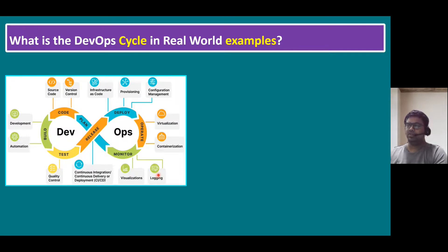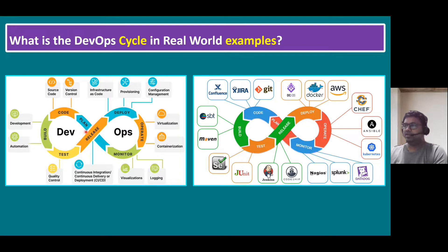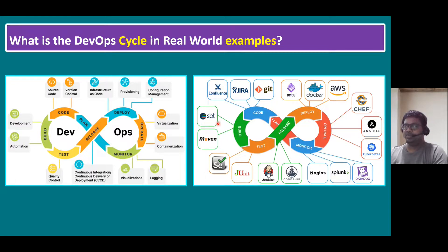For the Test stage, we can use tools like SonarQube and JUnit for quality control. When releasing to the operations team, we use release tools such as Jenkins or Codeship — these cover continuous integration, continuous delivery, or continuous deployment (CI/CD). Some tools are dedicated to a specific stage while others serve multiple roles. I will cover the importance of CI/CD in a later session.